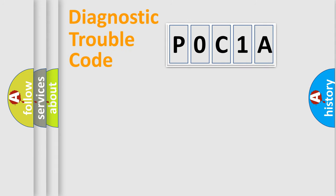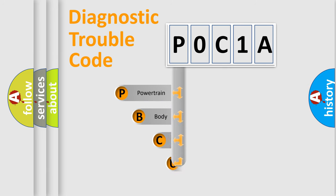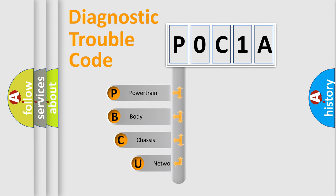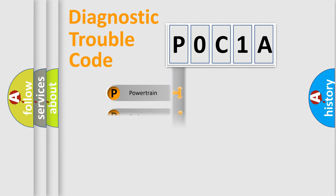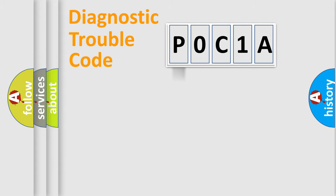First, let's look at the history of diagnostic fault code composition according to the OBD2 protocol, which is unified for all automakers since 2000. We divide the electric system of an automobile into four basic units: powertrain, body, chassis, and network.